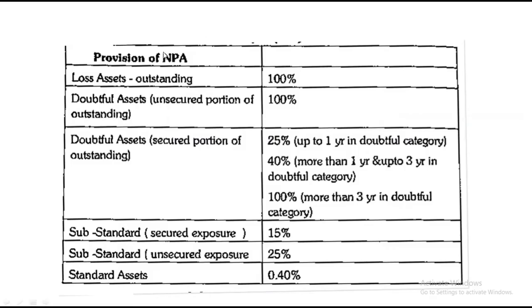There are some rules you have to remember, and thereafter you can solve any kind of sum based on provision of NPA. The first thing you need to learn is the provision for NPA — that is, non-performing assets. Basically, what they ask you to find is the provision: what is the reserve the bank needs to create? Because when the bank lends money, some loans become bad loans.